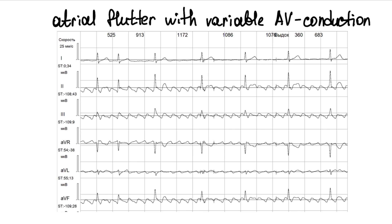If AV conduction is variable, we see irregular atrial flutter like this. The rhythm is irregular, but we can still see typical atrial flutter waves.